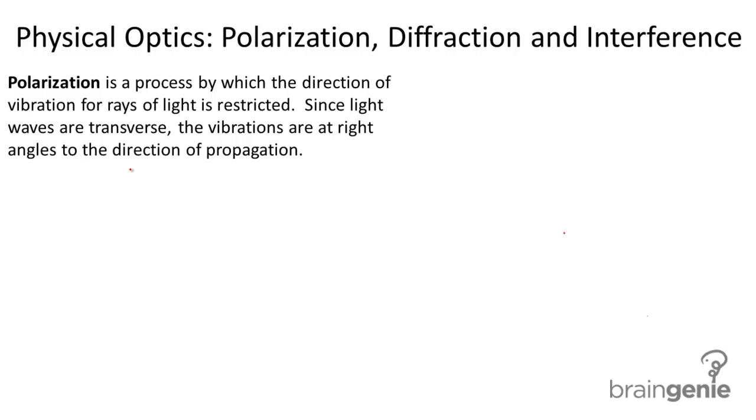Polarization is a process by which the direction of vibration for rays of light is restricted. Since light waves are transverse, the vibrations are at right angles to the direction of propagation. Light waves are transverse, so they vibrate in this drawing up and down, and that's perpendicular to the direction of propagation.